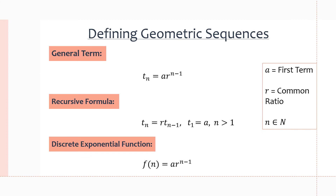Finally, let's go over the three ways to define geometric sequences, which are the same as arithmetic sequence definitions but with different formulas. First, we have the general term, which uses the position of the term to calculate the term itself. We need the first term a, the common ratio r, and the position n. The formula is: t(n) = a · r^(n−1), where t(n) is the term at position n, a is the first term, r is the common ratio, and n is the position.